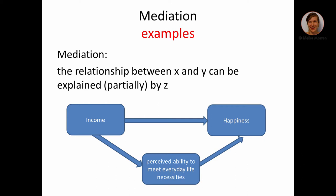An example of mediation: the relationship between income and happiness is mediated by the perceived ability to meet everyday life necessities. A higher income leads to a higher level of happiness, but part of this relationship can be explained by that perceived ability. Mediation is really more about causation between variables and explaining a direct relationship, rather than whether that relationship differs between different groups — as we do in moderation.